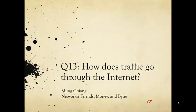Welcome to lecture 13 of Networks, Friends, Money and Bots. We have been talking quite a bit about social and economic networks, and we have seen that the predictive power of some of these models can be quite poor because it is very difficult to model human beings.